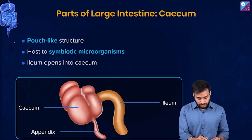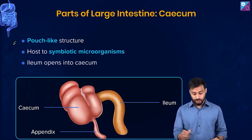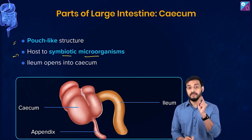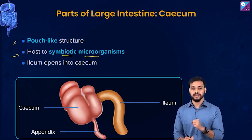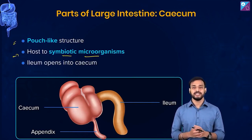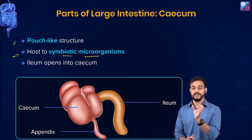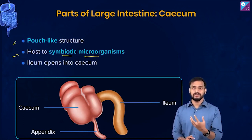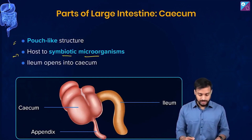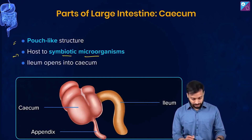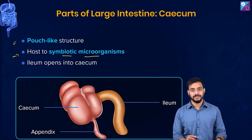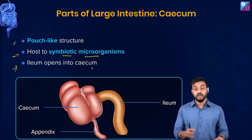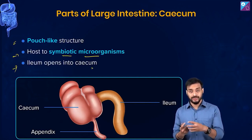The cecum is a pouch-like structure. A very important point: it is a host to many symbiotic microscopic organisms. You know symbiosis, right? We studied symbiotic relationships in the biological classification chapter. Also, the ileum — the last part of the small intestine — opens into the cecum.